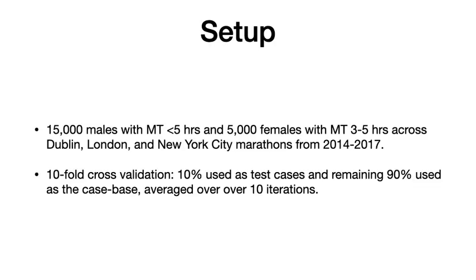For evaluation, we have 15,000 males with marathon times under five hours and 5,000 females with times between three and five hours, across the Dublin, London, and New York City marathons between 2014 and 2017. This reduced our dataset to around 20,000 runners from the original 21,000, trimming the extremes where very few runners existed. We used tenfold cross-validation: at each of ten iterations, 10% of cases were used as test cases and the remaining 90% as the case base, with error averaged across all iterations.